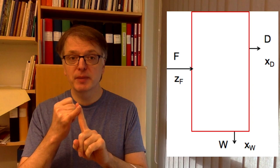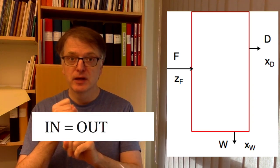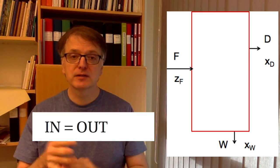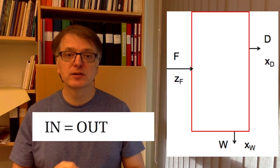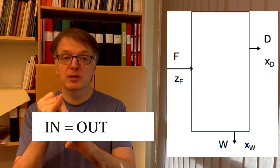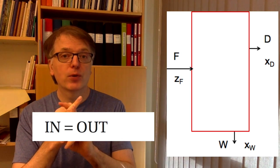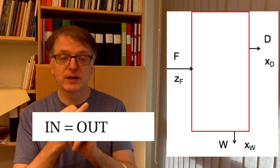So try to do this yourself now. Make one total balance for the system. In equals out. No fancy stuff, just steady state solution. So a total balance and a balance for the volatile component. Try that yourself.